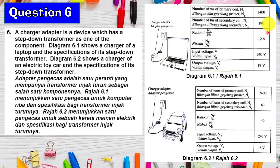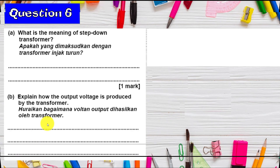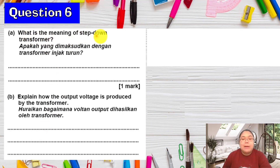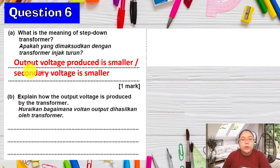We compare the two transformers. The number of primary turns is the same, but the number of secondary turns is different — for the toy car it is less. The ratio is also different: the toy car ratio is 40, the charger ratio is 12.6. Input voltage is the same for both, but the output voltage is different — the toy car is lower, only 6 volts. The question asks what is meant by a step-down transformer: it means the output voltage produced is smaller than the input, or the secondary voltage is smaller.